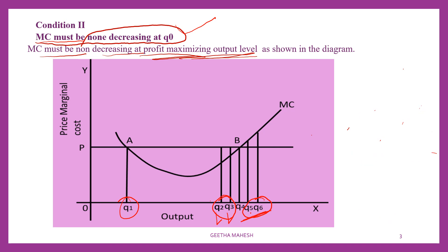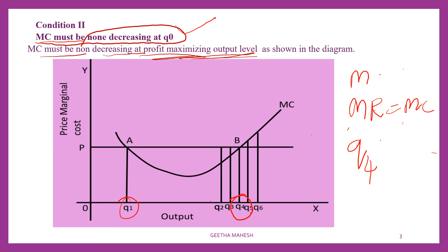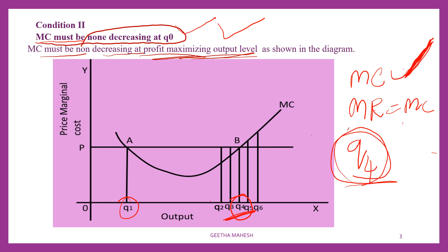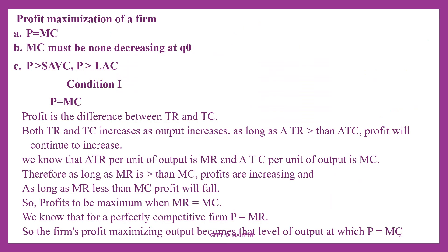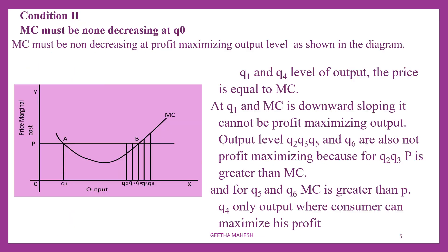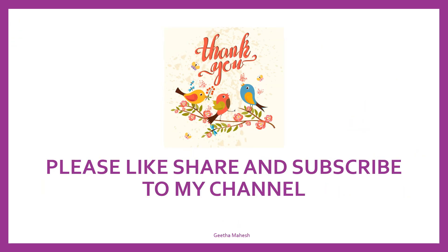The remaining quantity is Q4. At Q4, MR is equal to MC, and moreover MC is increasing — it is non-decreasing at Q4 level of output. So the second condition is satisfied at Q4. Therefore Q4 is the profit maximizing output. Dear students, you can make notes on the profit maximizing condition of a firm under perfect competition for 4 marks.